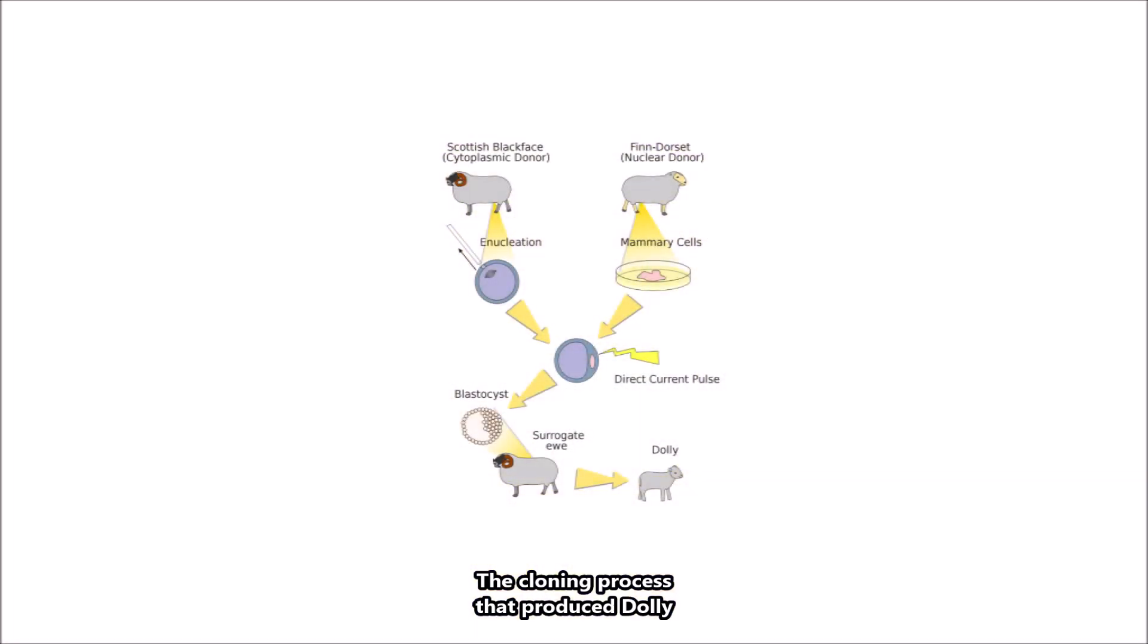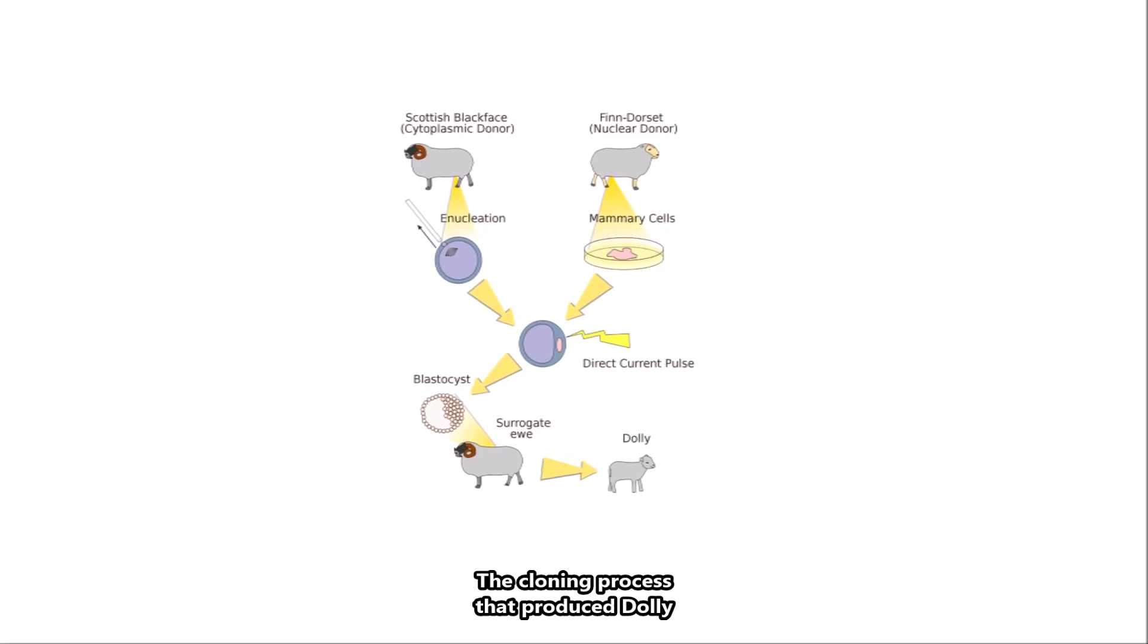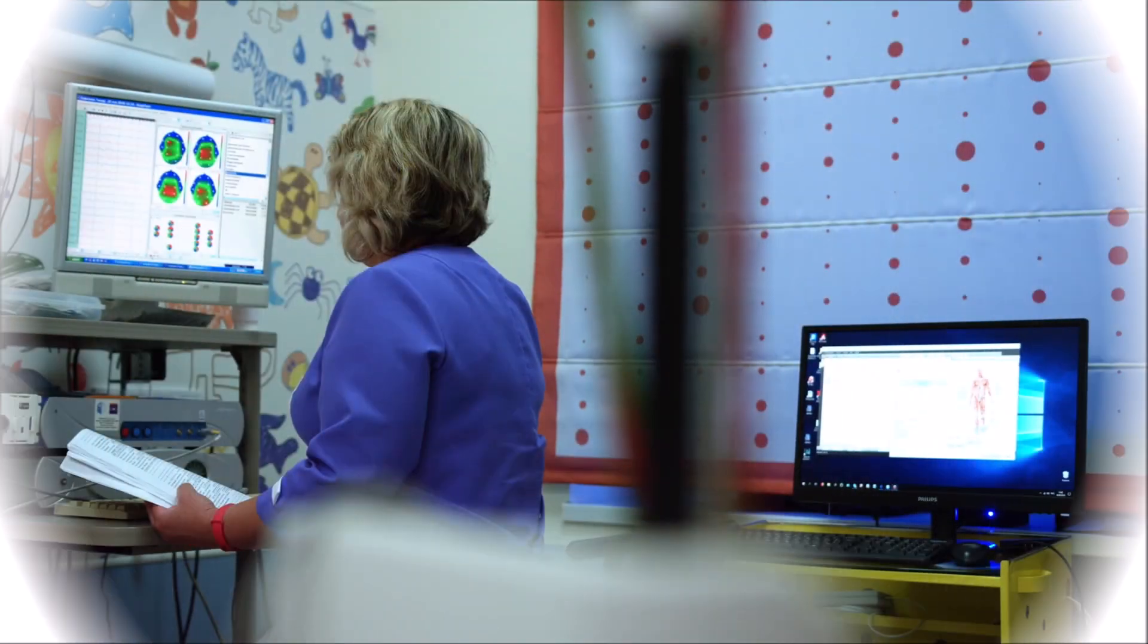Using an adult somatic cell from one sheep, an egg cell from another sheep, and the resulting embryo implanted in the womb of a third sheep saw baby Dolly carried to term.